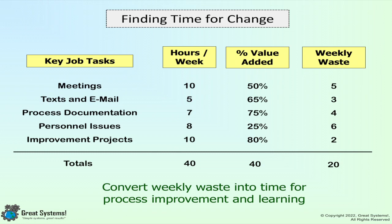These value added time percentages can then be used to project the weekly wasted time amounts that exist. If your current waste levels are high, don't feel too bad — you have just identified some prime areas where time exists to fuel your pursuit of process excellence. Most people can find at least four to eight hours per week of time that is currently being wasted from the customer's perspective. If this small amount of time is freed up and reinvested effectively in process improvement activities, you can eventually work yourself out of the reactive, firefighting world and into the world of proactive process improvement.